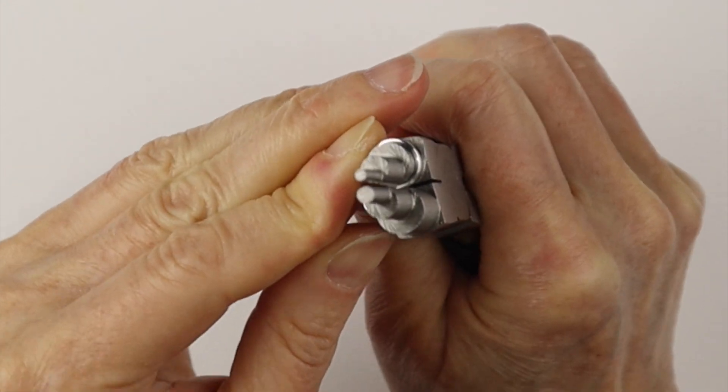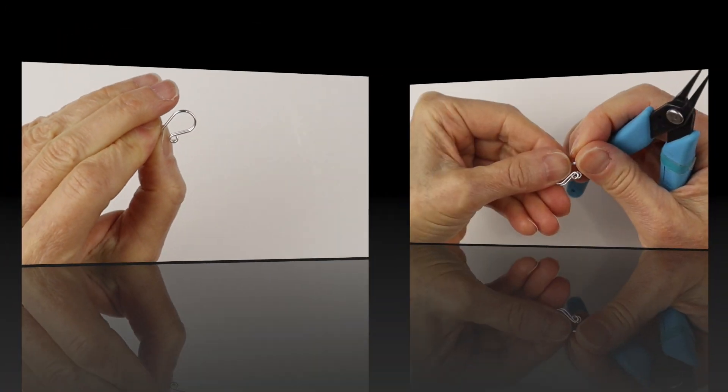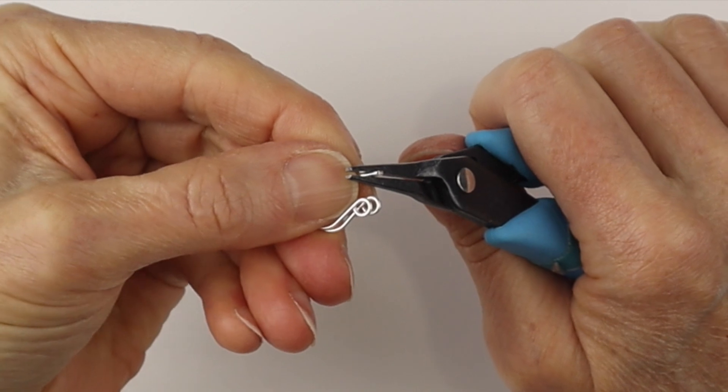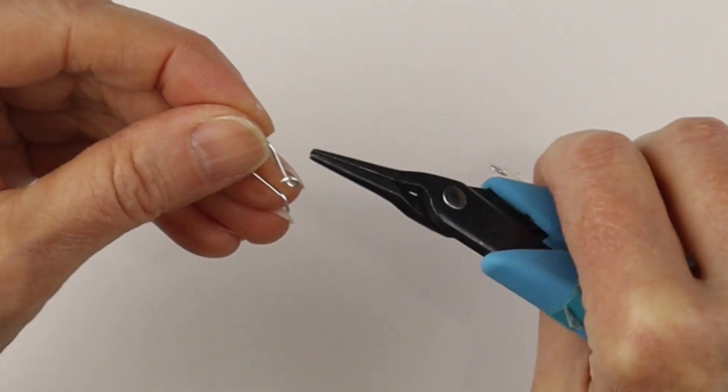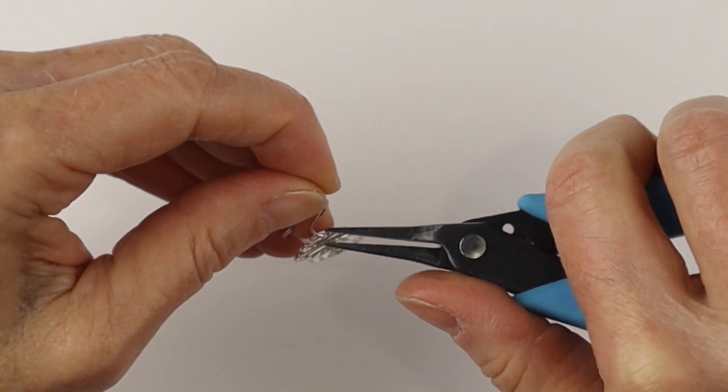And then with the bail making pliers again we're going to make a larger loop for the hook and then we're just going to bend it out. Be sure to file the end too so it's not sharp.